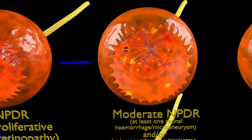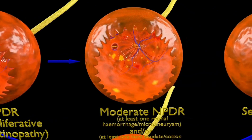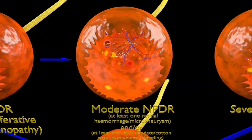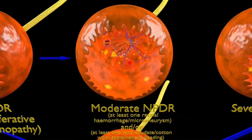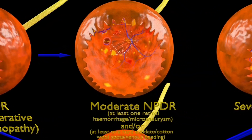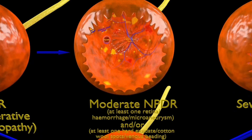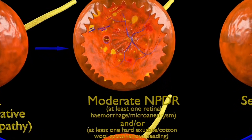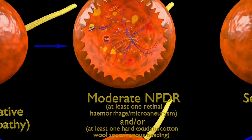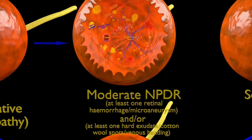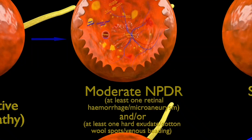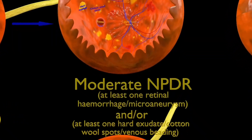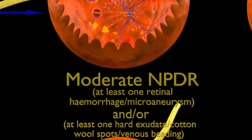This is the next stage of diabetic retinopathy — it is of moderate severity. In this stage, we see at least one retinal hemorrhage, microaneurysm, or one hard exudate, cotton wool spot, or venous bleeding.